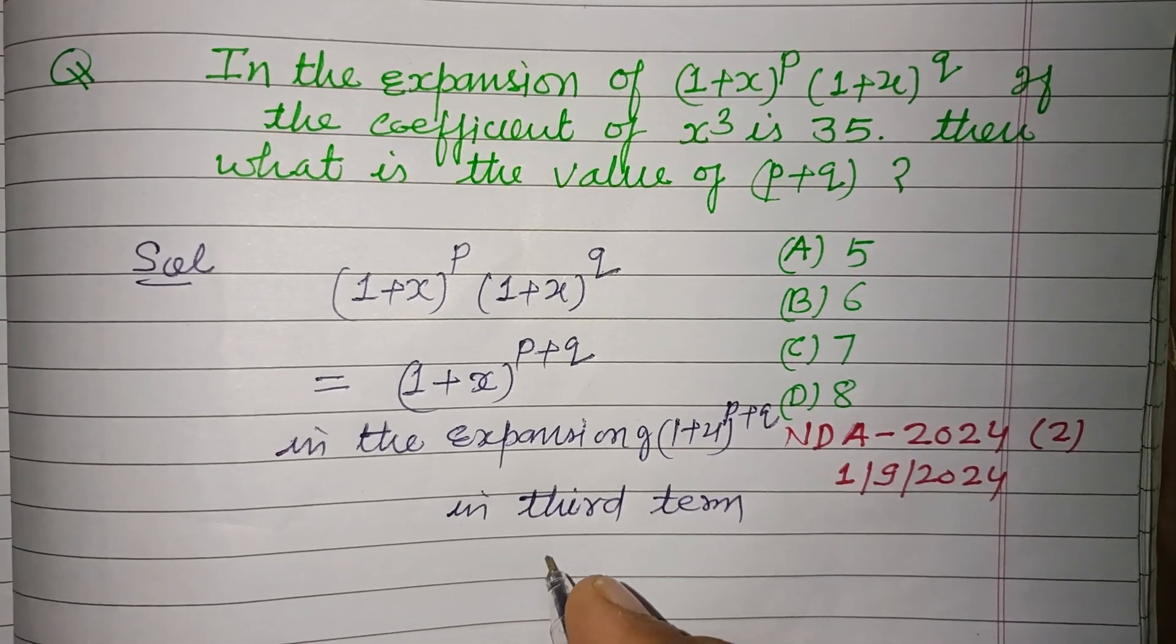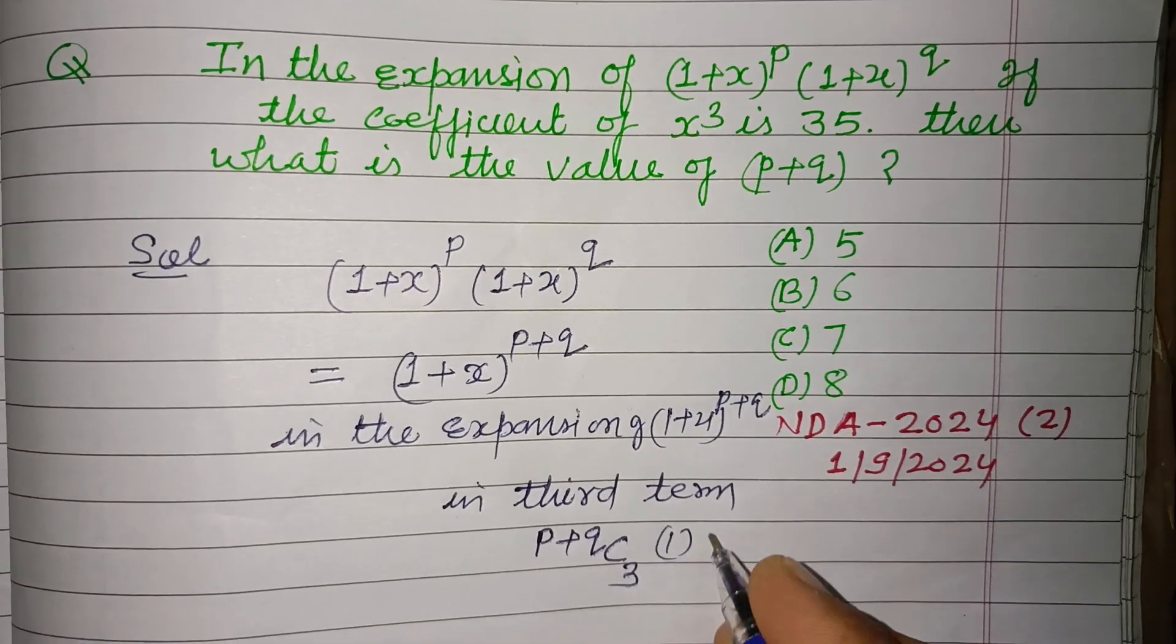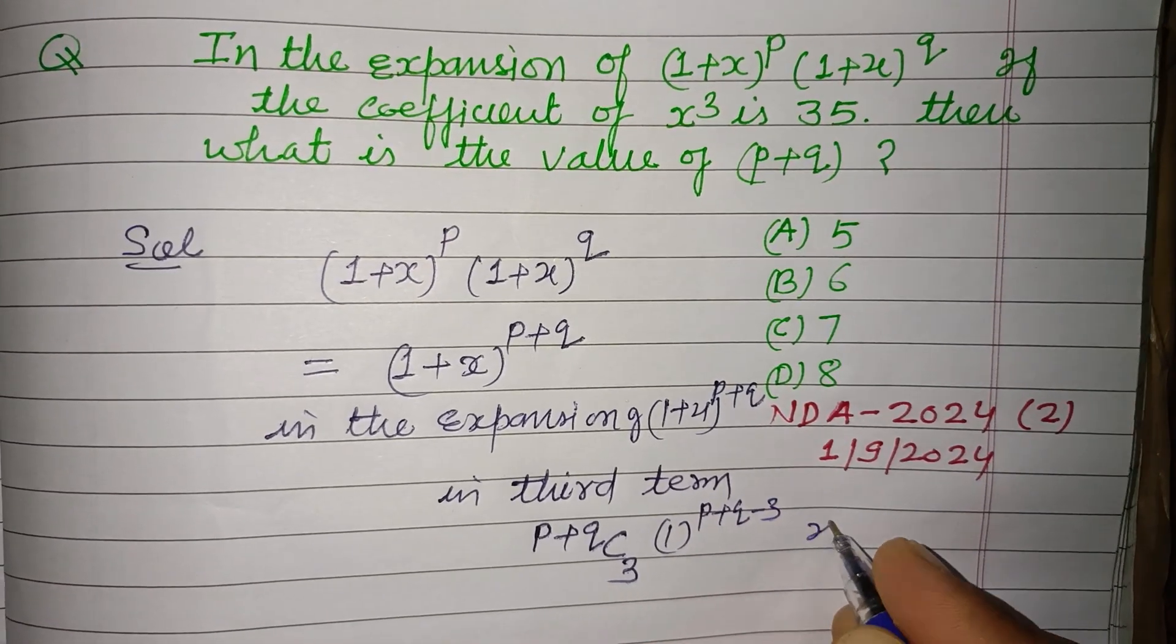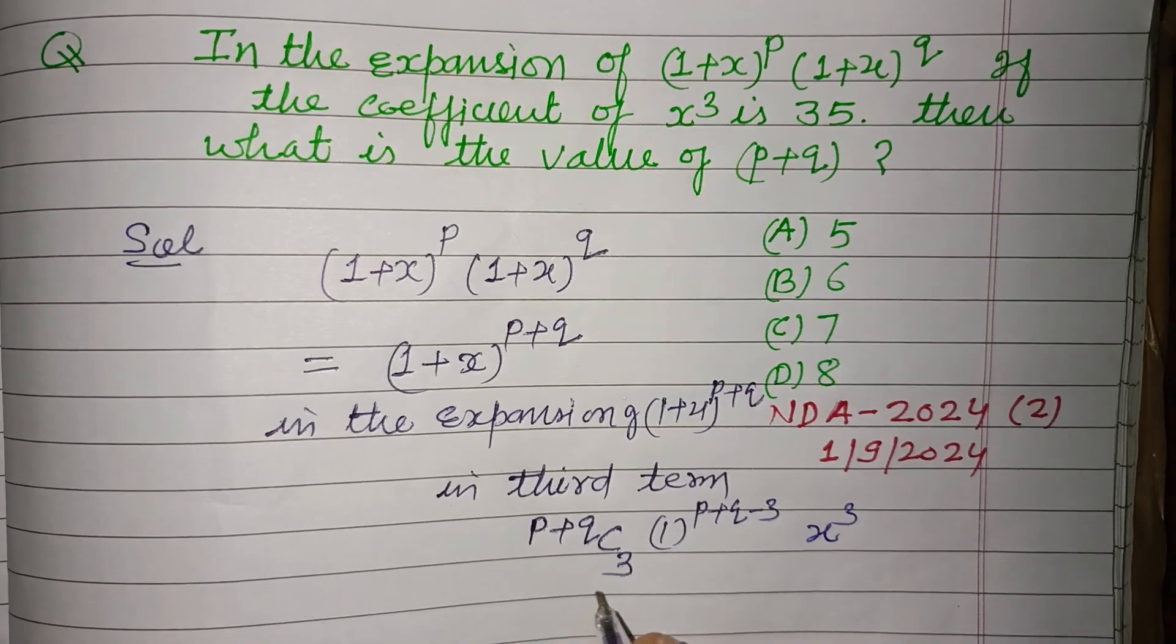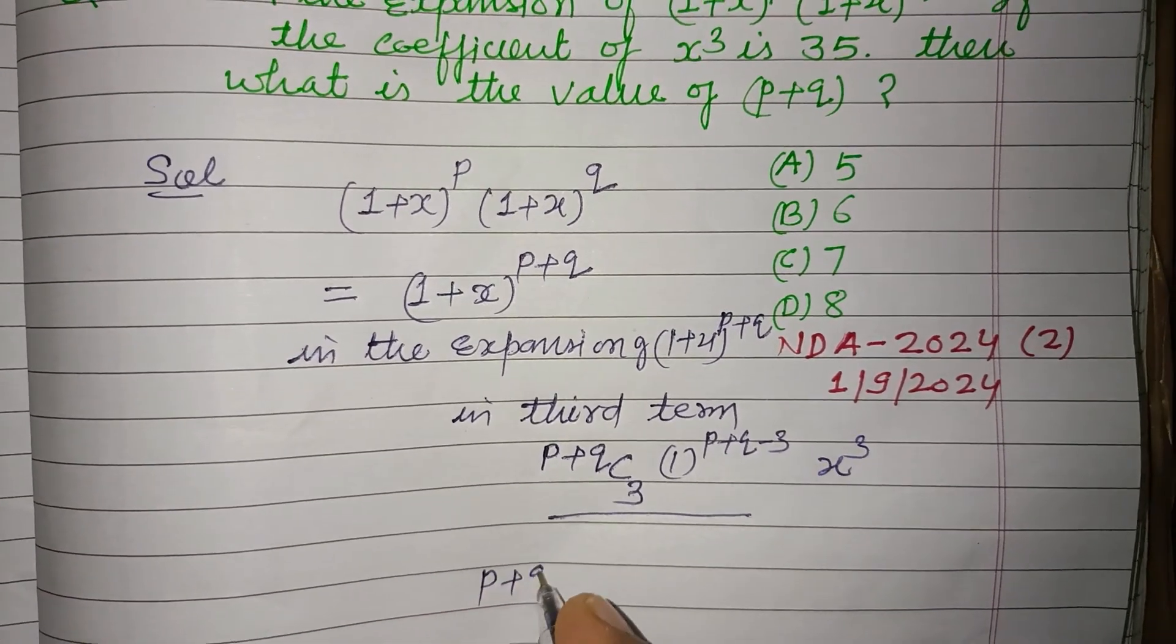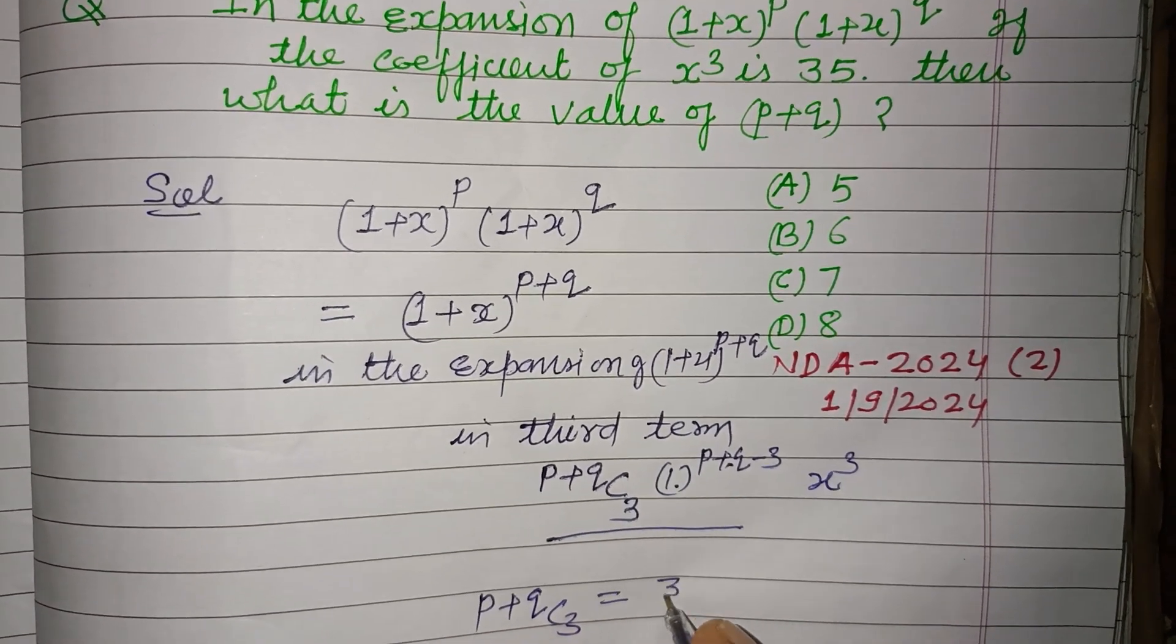So here (p+q)C₃ times 1 to the power (p+q-3) times x to the power 3. So this is the coefficient: (p+q)C₃, which is 1 to the power, so equal to 35.